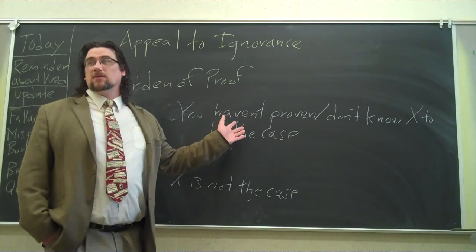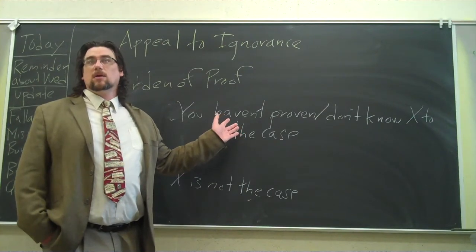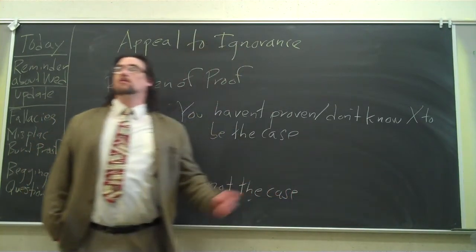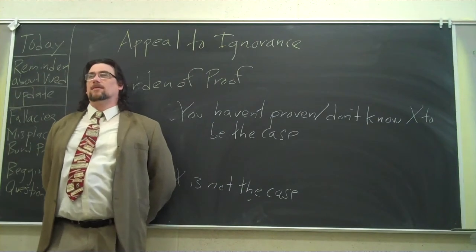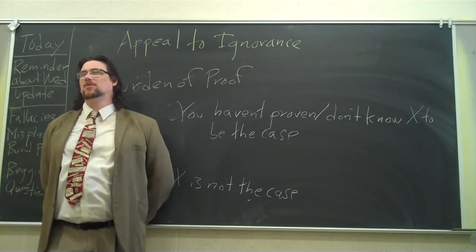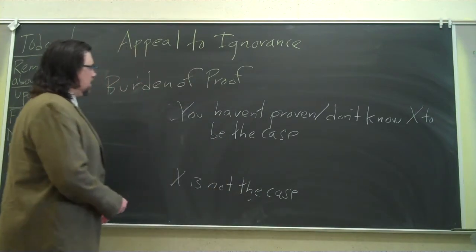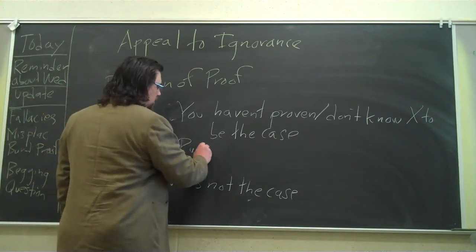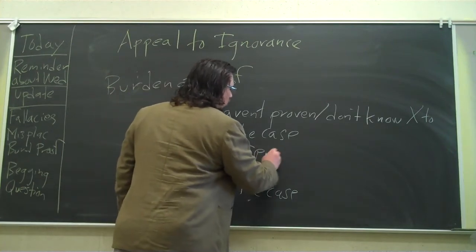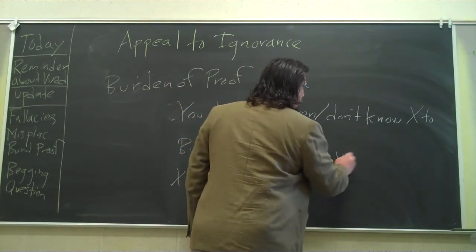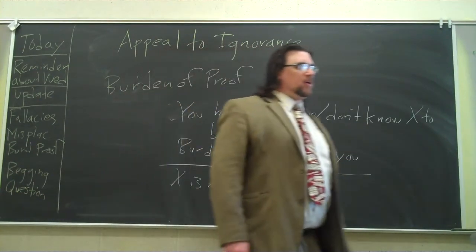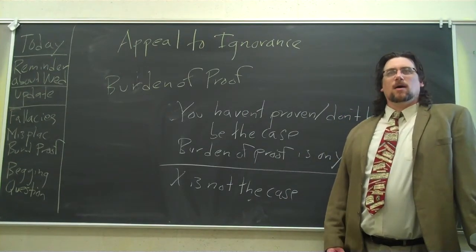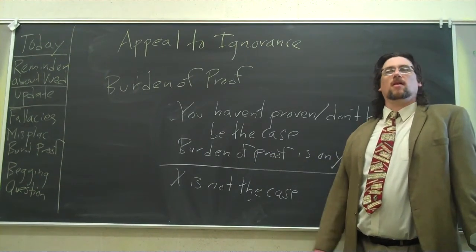So, you haven't proven that that's not the case. You don't know whether the CIA took them or not. You haven't tracked those students down. So, it is the case. Well, there's something wrong there. What's wrong there? There's an assumption being made that it has to do with the burden of proof.